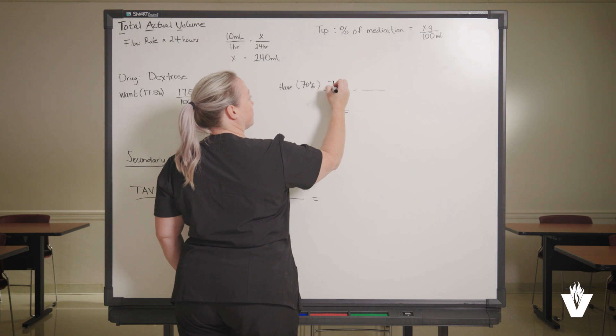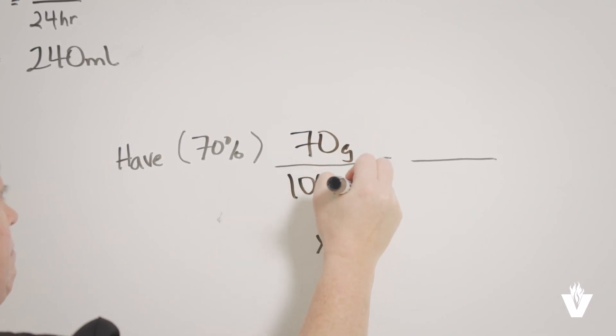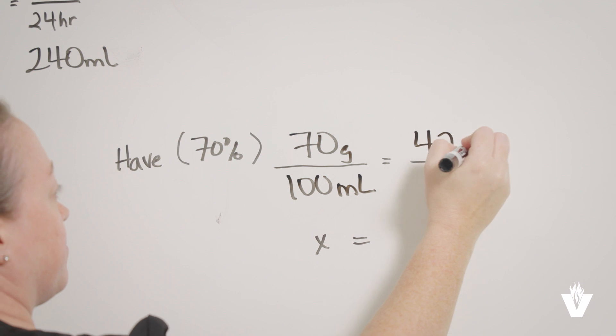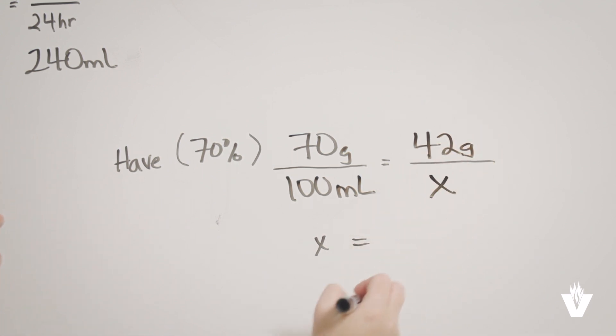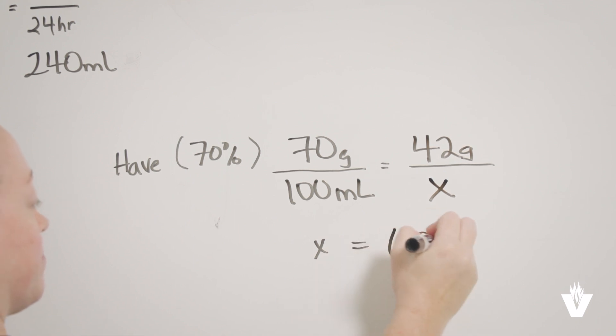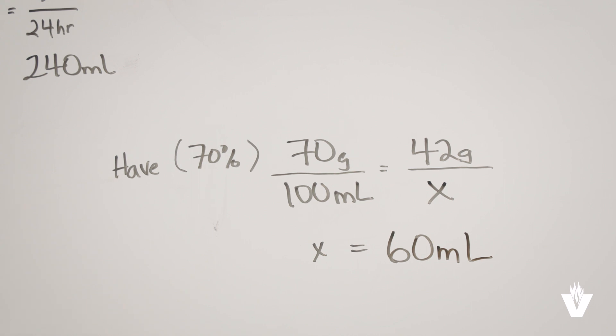We know we have on the left side of the equation 70 grams over 100 milliliters, because our dextrose is 70%. We need to calculate the number of milliliters of the 70% solution to total the 42 grams required for the order. So on the right, we have 42 grams over the unknown milliliters. Once we cross-multiply and solve for the unknown, we have 60 milliliters of the dextrose 70% solution that will be used in this order.